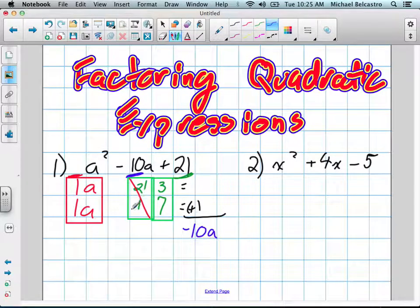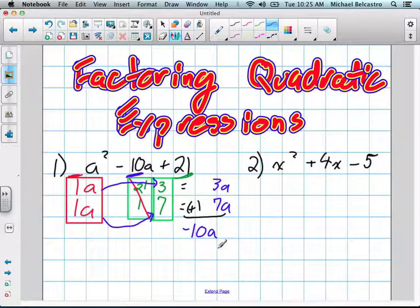We're going to be working with this: 1a times 3 and 1a times 7. That's going to give us 3a and 7a. Any combination of 3a plus 7a give us negative 10a? They both have to be negative.